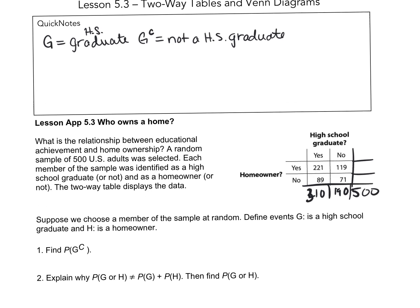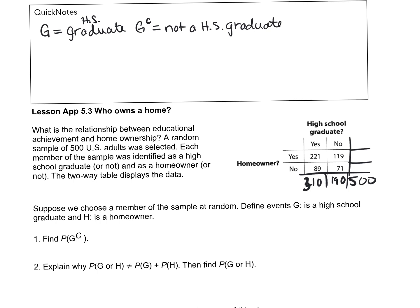So when it asks for the probability of G complement, that is 190 over 500.